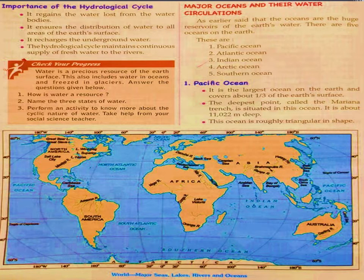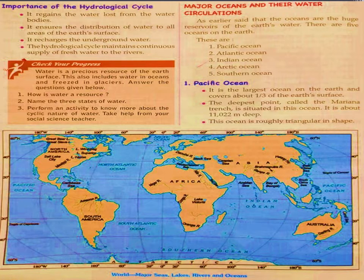Now we will discuss major oceans and their water circulation. Oceans are the huge reservoirs of the earth's water and there are five oceans on the earth: the Pacific Ocean, Atlantic Ocean, Indian Ocean, Arctic Ocean, and Southern Ocean.